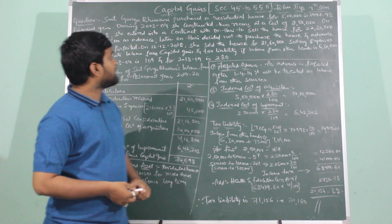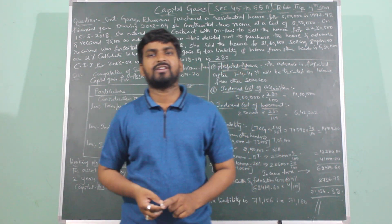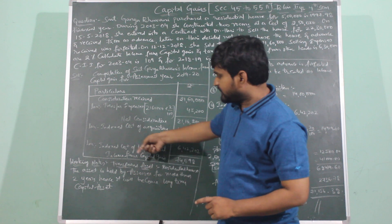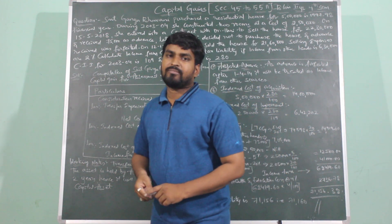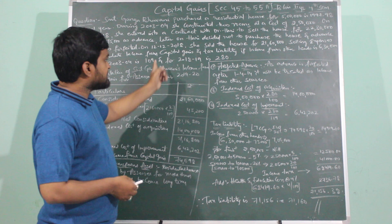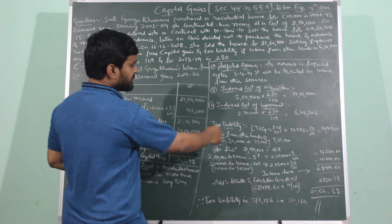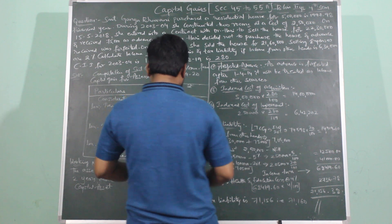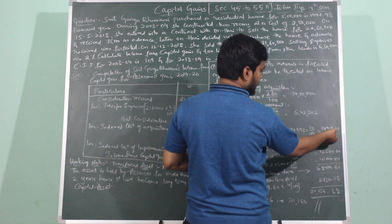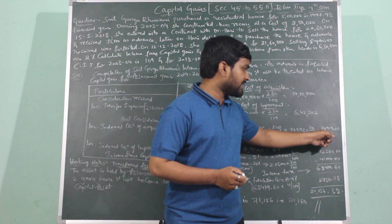Less indexed cost of improvement: Rs. 6,42,202. So the long-term capital gain is Rs. 74,598. Long-term capital gain is always taxed at a flat rate of 20%. So tax on capital gain = 74,598 × 20% = Rs. 14,919.60. Long-term capital gain tax payable is Rs. 14,919.60.